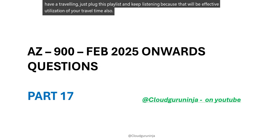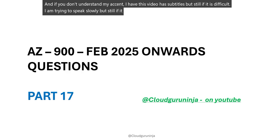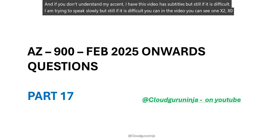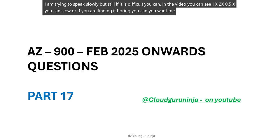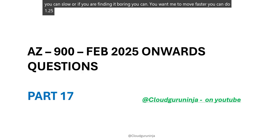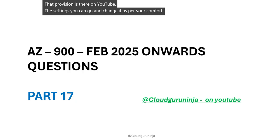If you do not understand my accent, this video has subtitles. If it is still difficult, or if you find it too slow or too fast, you can adjust the playback speed in YouTube settings — 0.5x, 1x, 1.25x, or 2x — as per your comfort. See you in the next part.